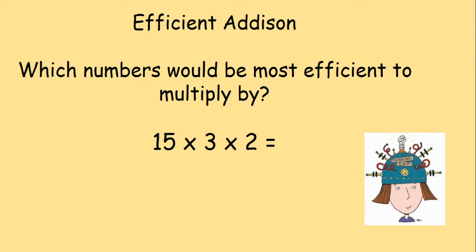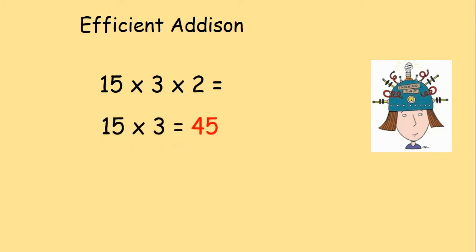We're sticking with efficient addition, but we're thinking of a different kind of question. My question is 15 times 3 times 2. We need to think about which numbers would be the most efficient to multiply by. Press pause now to work out your answer and then press play once you are ready. Well done. First, I would multiply 15 by 3, which would give me 45. I would then multiply my answer by 2, 45 multiplied by 2, which gives me 90. I would leave this last because then it makes it easier as I can just double my answer. You could have also multiplied 15 by 2 and then multiplied the answer by 3.